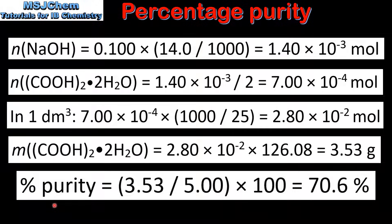Finally we calculate the percentage purity. We divide the mass of the pure ethanedioic acid by the total mass of the impure sample, then multiply by 100, to give us 70.6%.